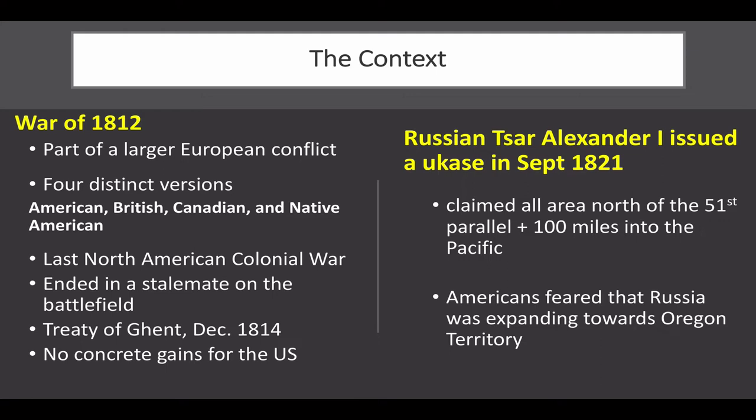The war ended in a stalemate on the battlefield, and in December 1815, under the mediation of the Russian Tsar, Britain and the United States signed the Treaty of Ghent. This peace treaty did not resolve the maritime issues that caused the war; it merely provided for returning to the state that existed before the war. While there were no concrete gains for the United States, the War of 1812 produced a new generation of American generals and propelled four men to the presidency: James Monroe, John Quincy Adams, Andrew Jackson, and William Henry Harrison. The war also boosted American self-confidence and encouraged American expansionism.